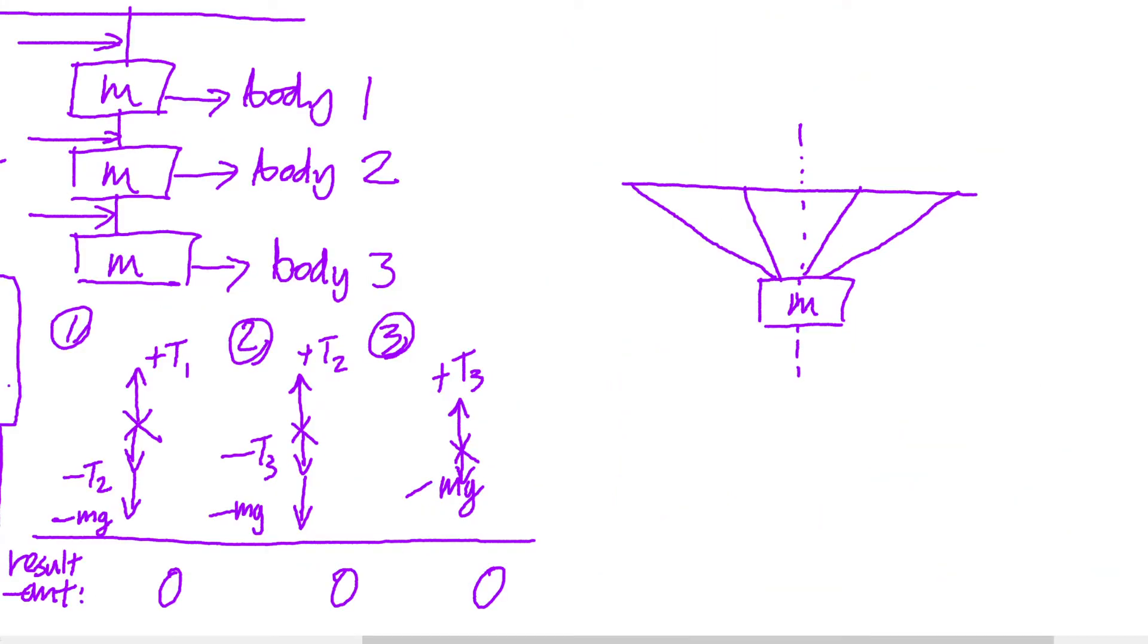If you've got a more complicated situation with plenty of tension forces in multiple directions, do not fear either. As long as you are able to draw the free body diagrams of any bodies involved in the system, the same technique holds. First, you number the ropes and label them with tension forces that you assign to each of the ropes.